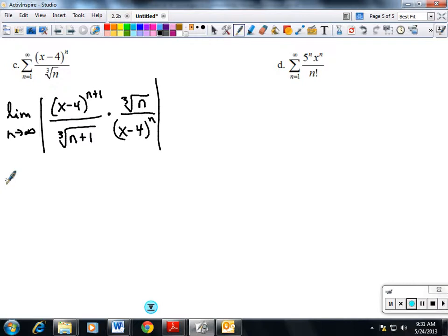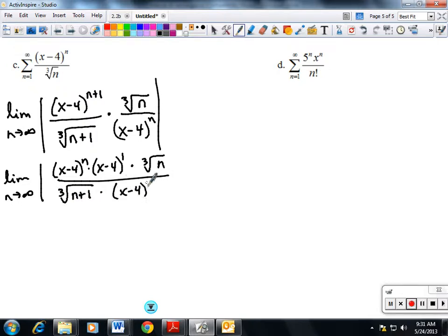So I'm going to write this out. It would be the limit as n goes to infinity of (x-4)^n times (x-4)^1 times the cube root of n over the cube root of (n+1) times (x-4)^n.